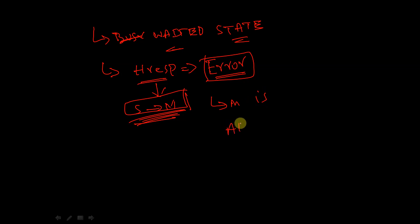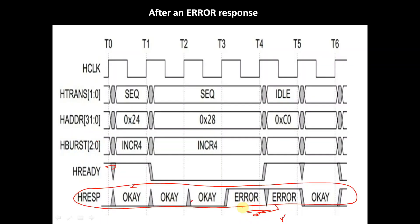So during an error response by the slave, the master is allowed to change the address. Here we can see during an error response, the address is getting changed from 0x28 to 0xC0. And when the response is okay, then normal continuation. So when we get an error response during a wait state, then a master is allowed to change the address.